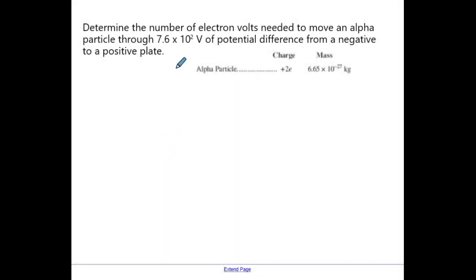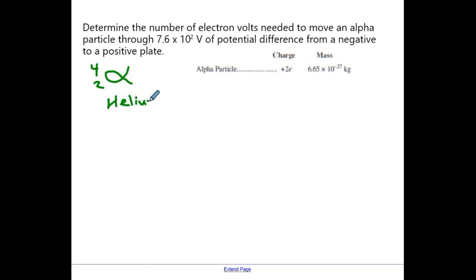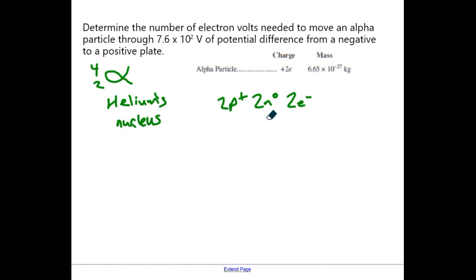Let's try an example: we're going to figure out the number of electron volts needed to move an alpha particle through a potential difference from a negative to a positive plate. An alpha particle is represented with this symbol with a 4 and a 2 in front of it. It is effectively helium's nucleus. Helium has two protons, generally two neutrons, and normally two electrons, and it's often a very stable atom. But it's actually possible to rip those electrons off.